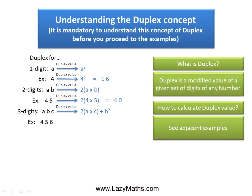So, if the number is 456, the duplex value is going to be 2 times 4 times 6, plus the middle digit 5 squared, and this gives us 73 as the value.